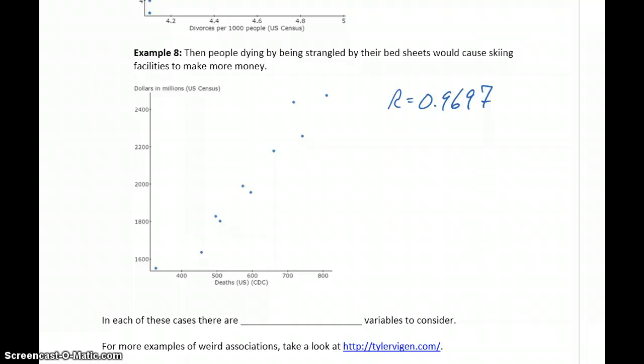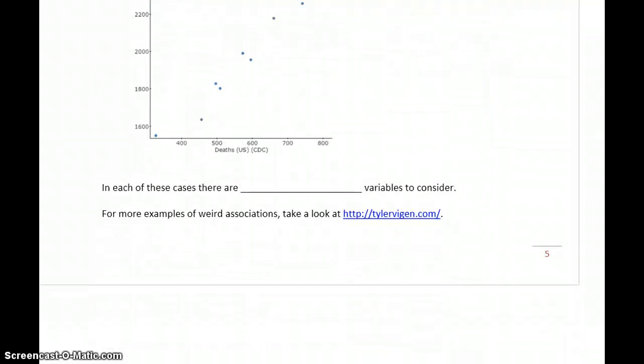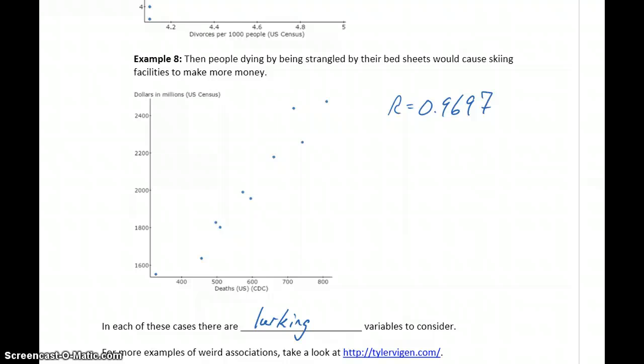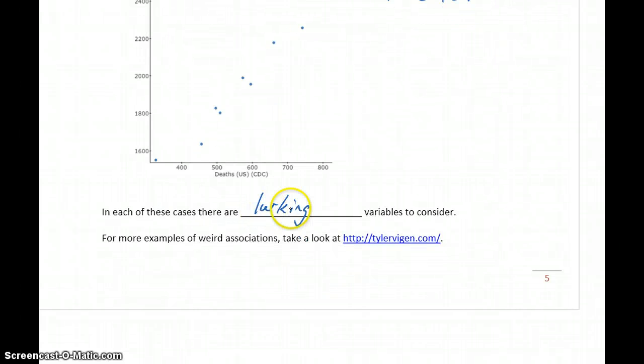In each of these cases, we need to think about what lurking variables there might be. Lurking variables are the idea that there are other variables that control what's happening - something else that affects both of these. The fact that there's an association is just an interesting thing to notice. But in each of these examples, it really doesn't make practical sense that there's any cause-and-effect relationship. There's probably some other lurking variable that wasn't included in the study causing both of those things to change together.